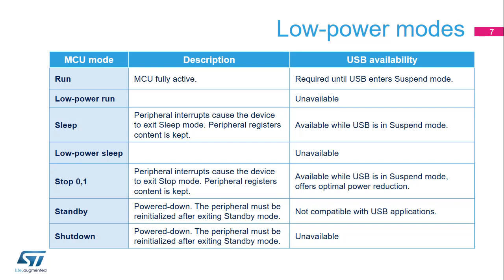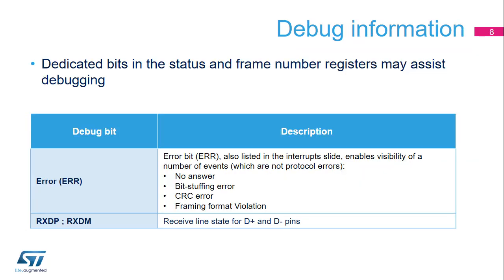Standby mode should not be used. The USB peripheral is not available in low-power run, low-power sleep, and shutdown modes. Some debug help is available using a single status bit, which corresponds to an interrupt event. Within the USB device controller, the dedicated ERR status bit provides some debug functionality in a USB application in relation to various events. The events that can trigger this debug bit are listed in this table. There is also a way to directly read the states of the D-plus and D-minus lines.